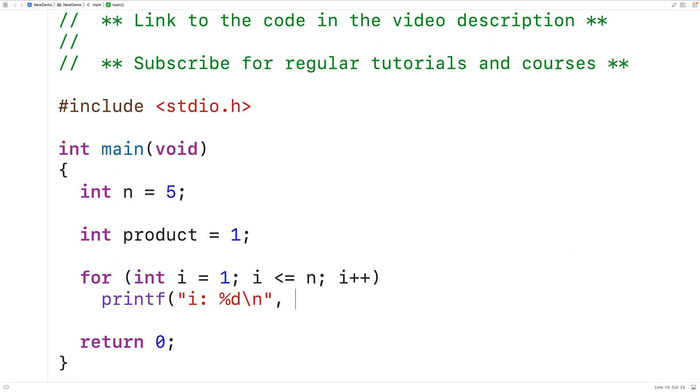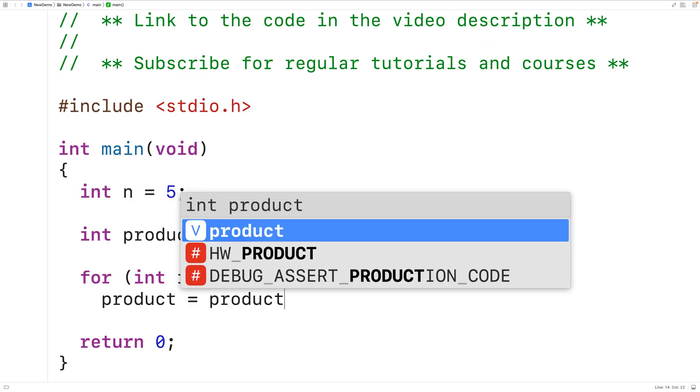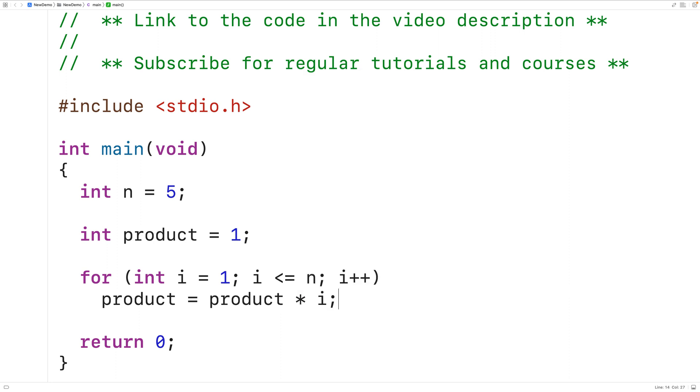So what we can do is instead of outputting i, we can have product is equal to product multiplied by i. So what this is going to do is multiply the product by i and store the result back into product. That's going to have the effect of computing the factorial, because we keep taking the result of the last multiplication, which is stored in product, and multiplying it by the next value i. And all together, we'll get the product of all these integers between 1 and n. Now we could shorten this a little bit. We could have here star equals. What this will do is multiply i by product and store the result back into product, just as before. But this is a short form version of the same thing.